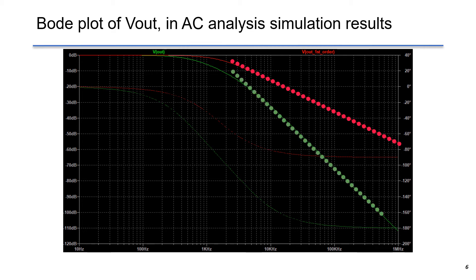We know that a single pole gives the magnitude slope of minus 20 dB per decade. Therefore, minus 40 dB per decade is a good indication of two poles in the system.